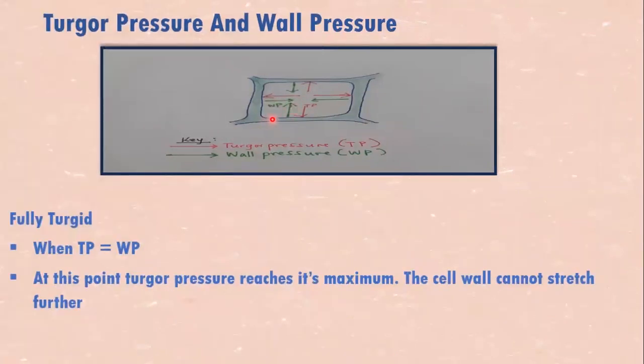We have a situation where the cell can no more take in water because the cell wall can no more stretch to protect the cell from bursting. Then, no more water can get in.